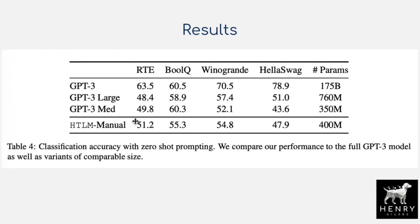Another example is zero-shot classification, where they use class and ID tags to guide the classification of a paragraph. They don't quite beat GPT-3 models here, but still perform pretty well with this new objective. The idea is using the HTML tag signal to classify paragraphs according to their topic.